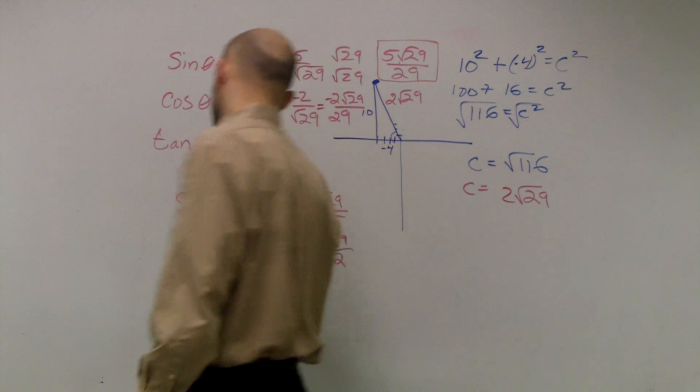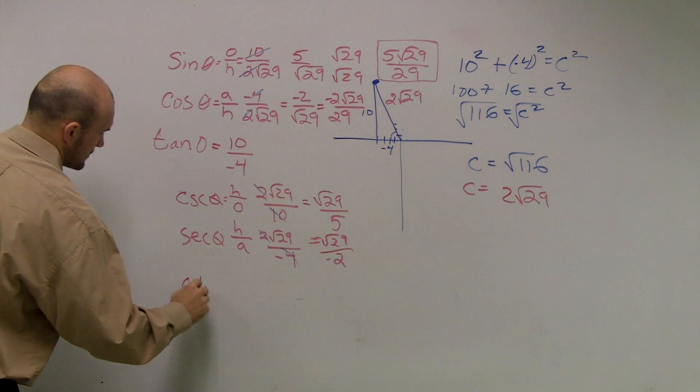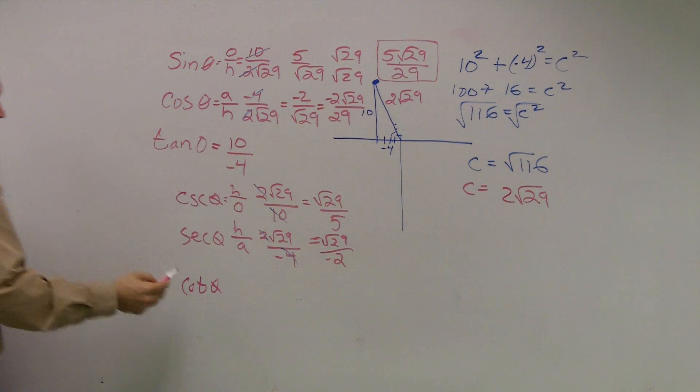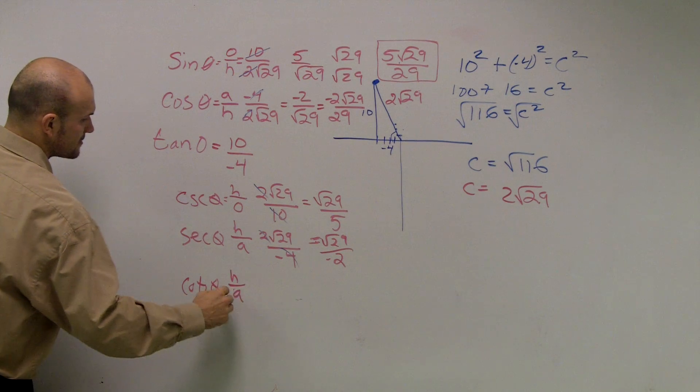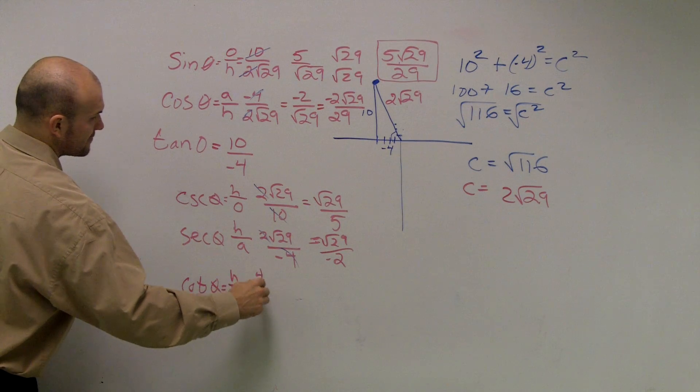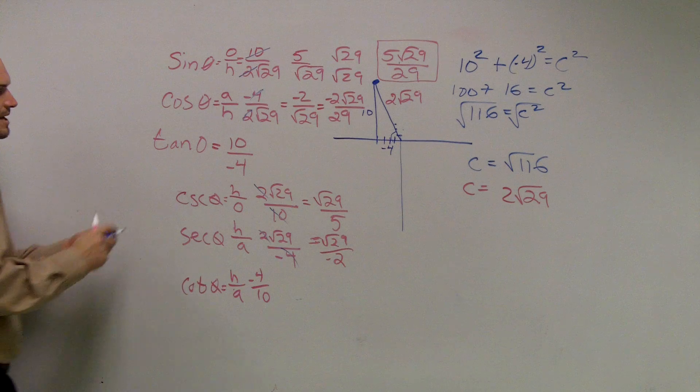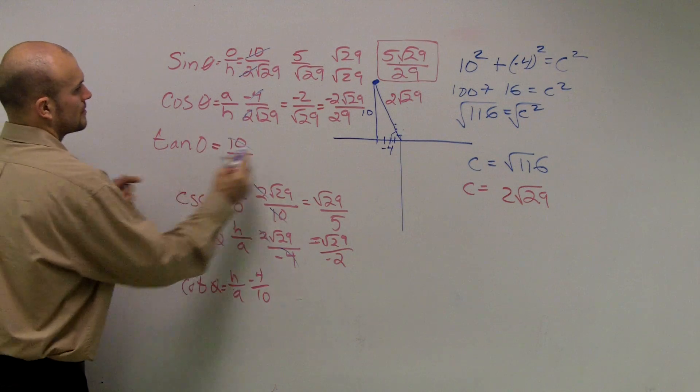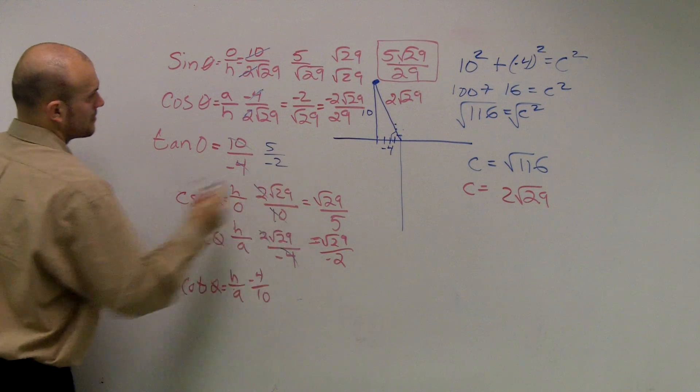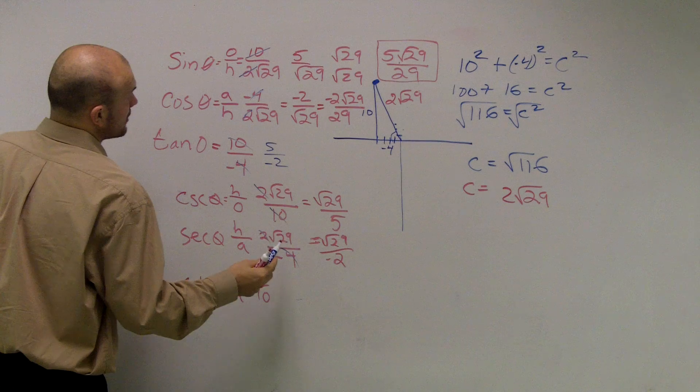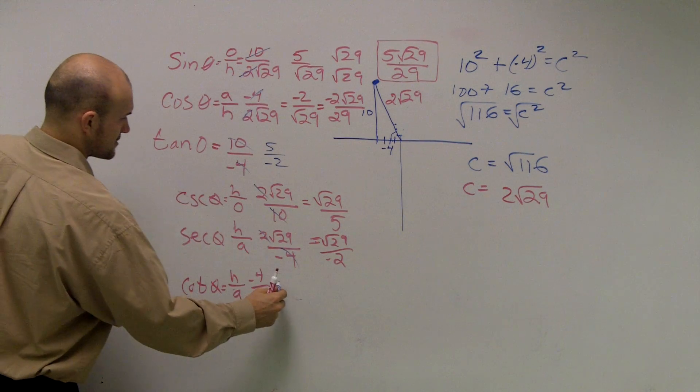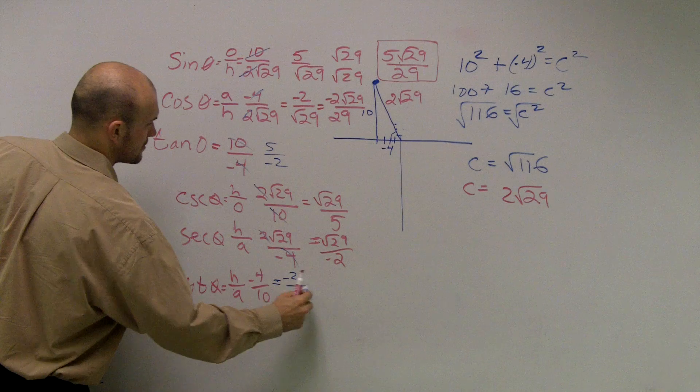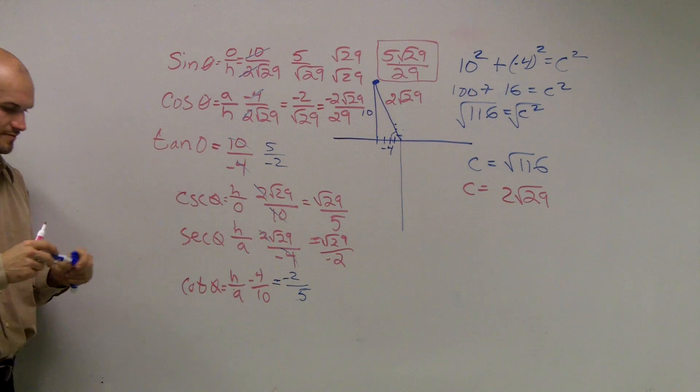And the last one is cotangent, and that's going to be adjacent over opposite. So that's going to be a negative 4 over 10. I don't know why I didn't simplify this. Do you have to? Yeah, just like we're simplifying everything else. Simplify it.